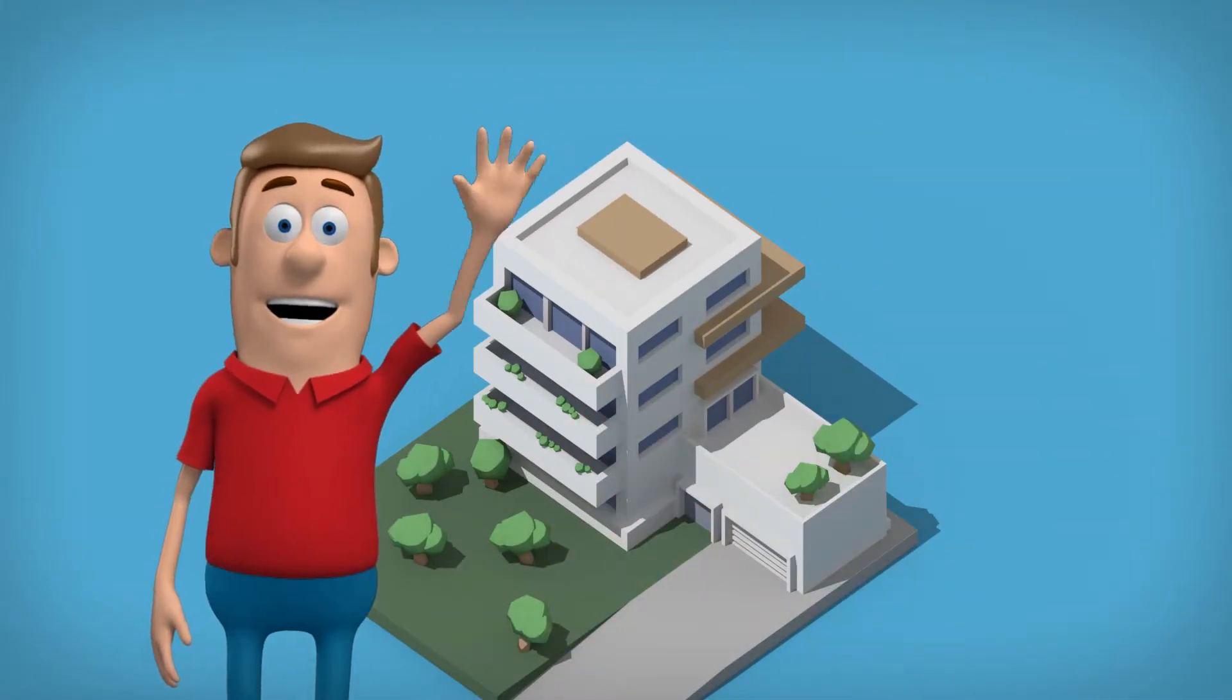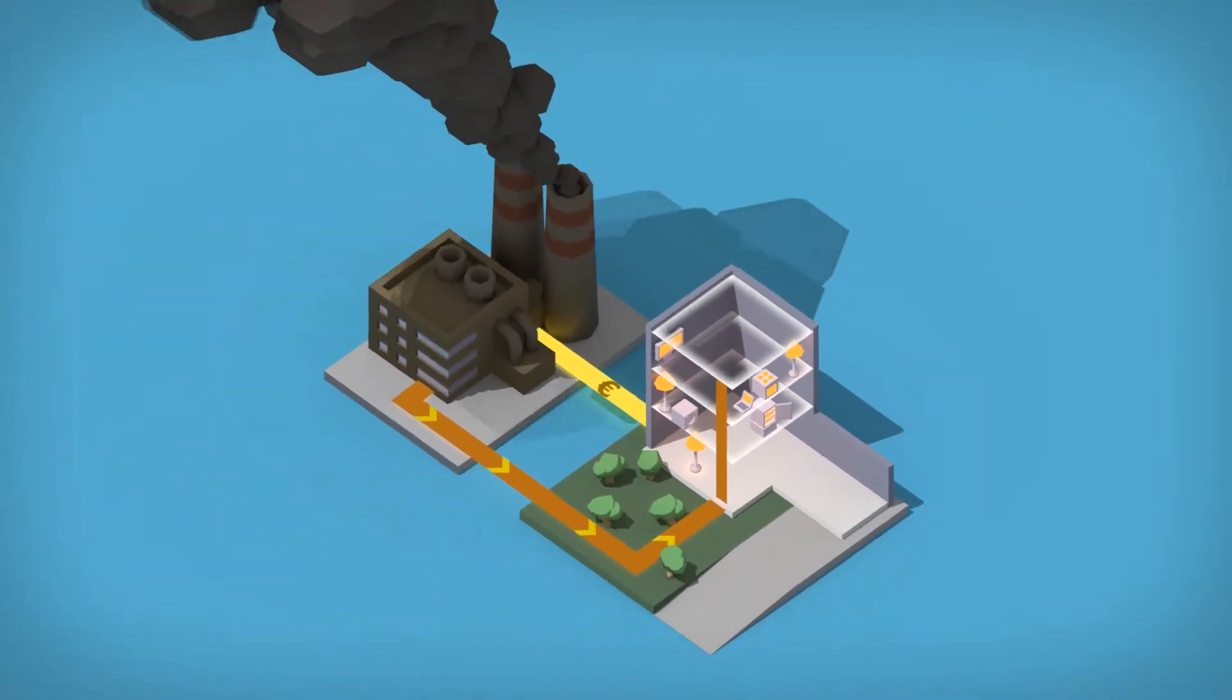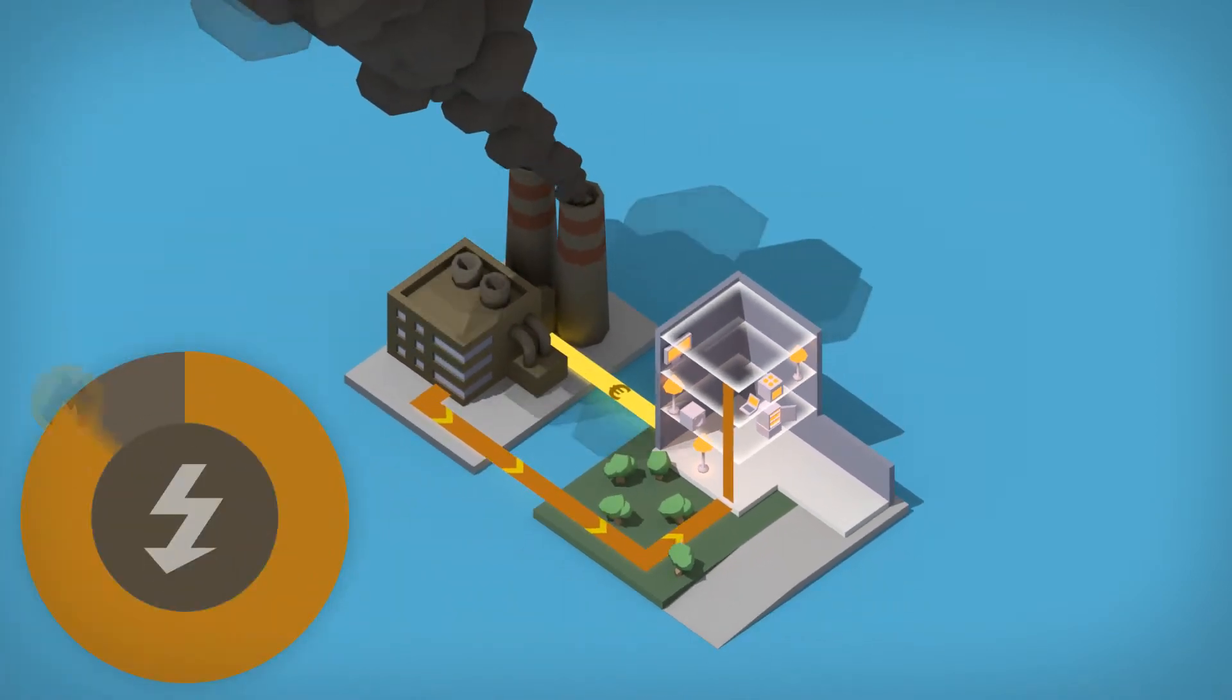This is where Tom lives. Tom and his neighbors consume electricity from a power plant that runs on fossil fuels. That is complicated, expensive and produces tons of CO2.